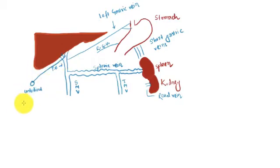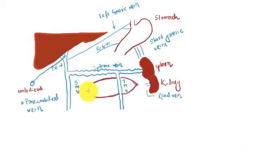Here we have a vein connecting the portal circulation to the umbilicus, known as the para-umbilical vein. This is a fetal vein which closes after birth and converts into a ligament, but a patent lumen remains inside which can open when there is a rise in pressure in the portal vein. Here we also have the pancreas and the pancreatic veins, which drain into the splenic vein.